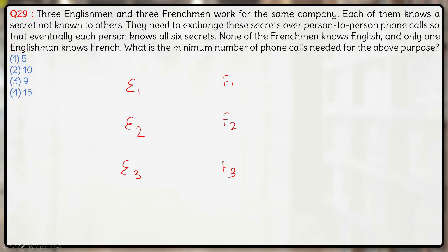So what should happen is for all of them to know their secrets. Let's consider this as a group: E1, E2, E3 and F1, F2, F3 will be a group. Now, how can the data be transferred from English to Frenchmen and Frenchmen to English? It can only be transferred if this F3 person who knows both English and French.